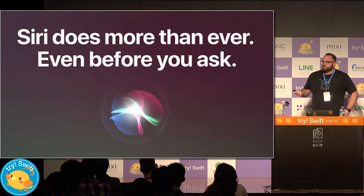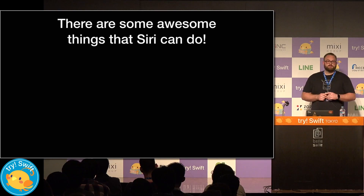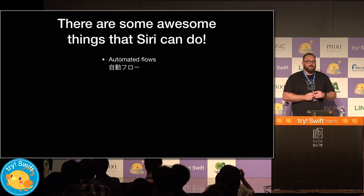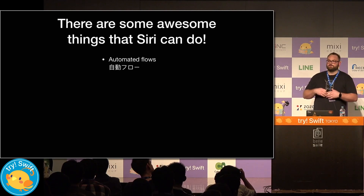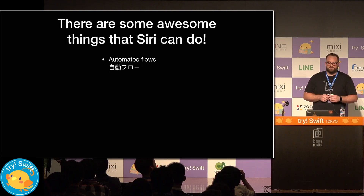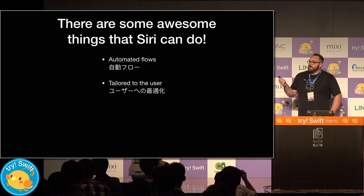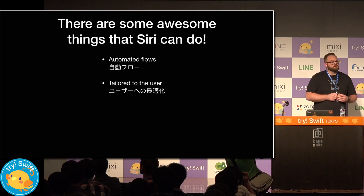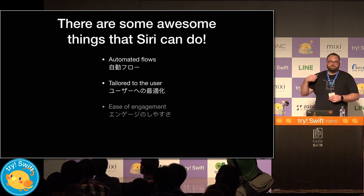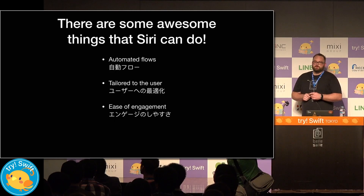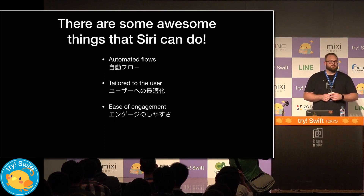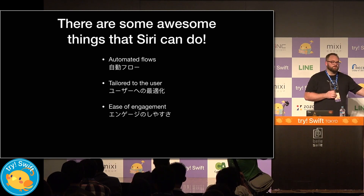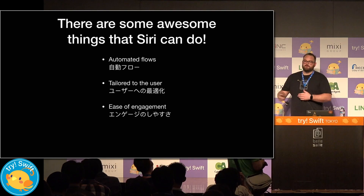Now, if you're not already familiar with Siri Shortcuts, Siri can do some awesome things. First, you can automate repeatable actions so that different features in your app can show up more easily for your user to access. You can tailor these interactions to your users so that different actions may show up for different users, depending on what kind of logic you implement. And it makes it easier to engage with your app, so that your users are able to see it in places they maybe didn't expect, and with simply a tap or executing a voice command, they can jump straight into their favorite features.